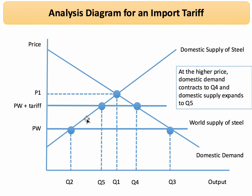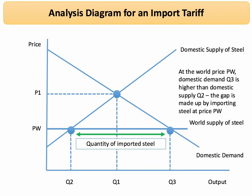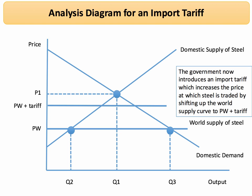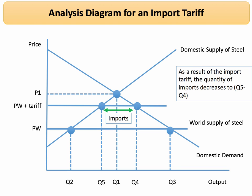Domestic supply expands to Q5 and domestic demand contracts to Q4. The net result is that the volume of imports decreases to the distance Q5 to Q4 — the tariff has reduced the quantity of imports. To recap the animation: before the tariff, imports span Q2 to Q3. The tariff raises the price, domestic supply increases, domestic demand decreases, and the quantity of imports contracts.